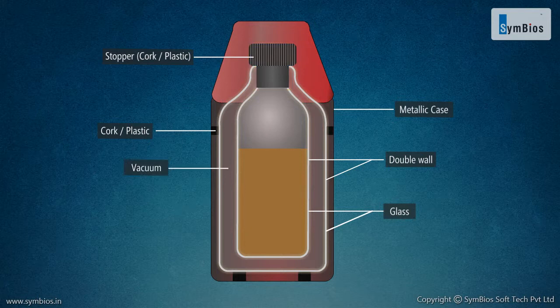The vacuum between the two glass walls of the thermos flask considerably reduces the flow of heat by conduction and convection because both need molecules of a medium to transfer heat. The silvered surface reflects the heat back, thus reducing radiation.